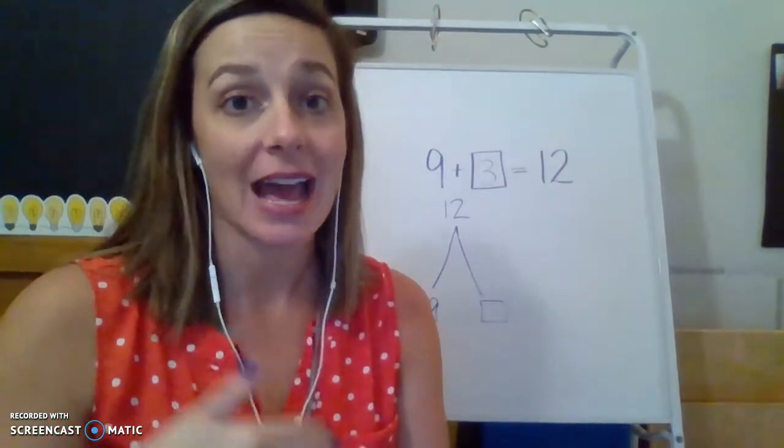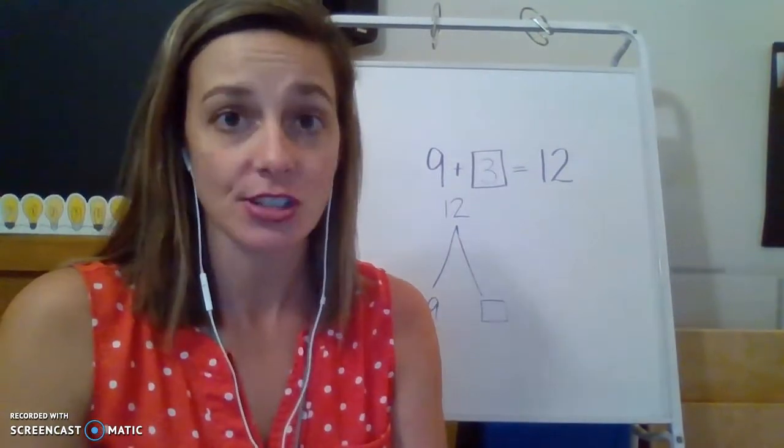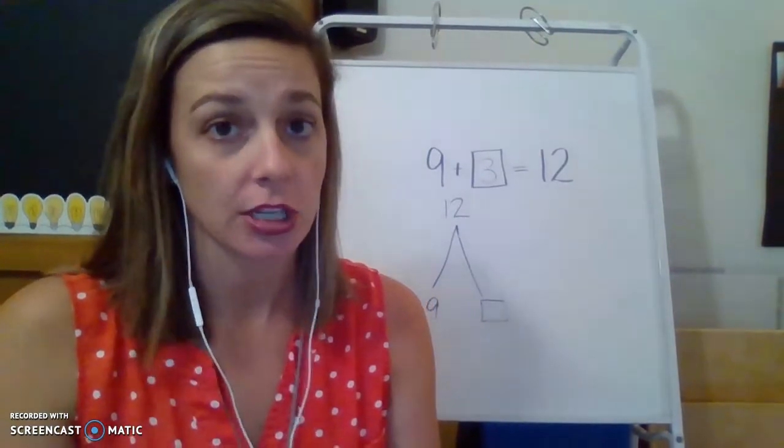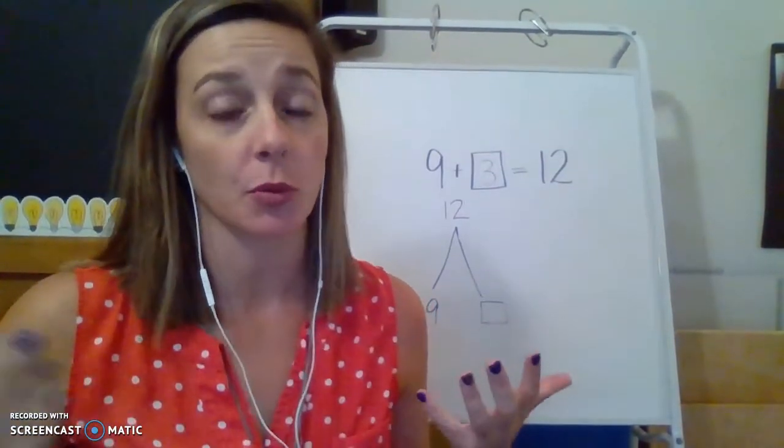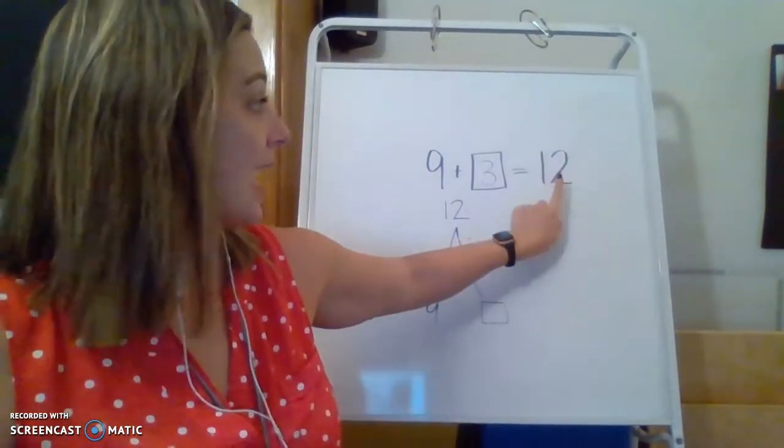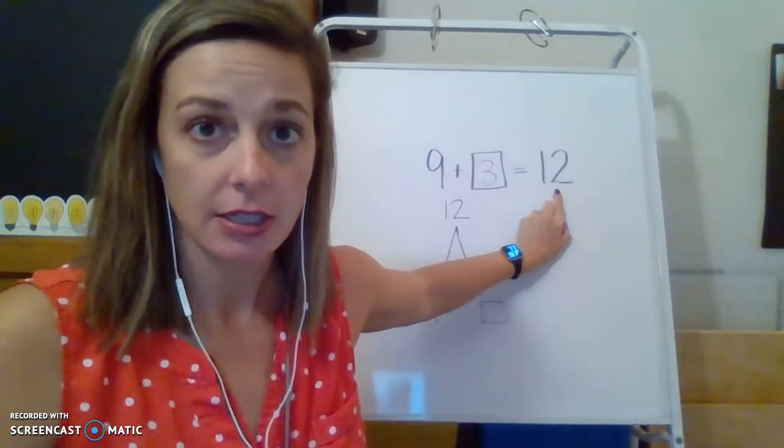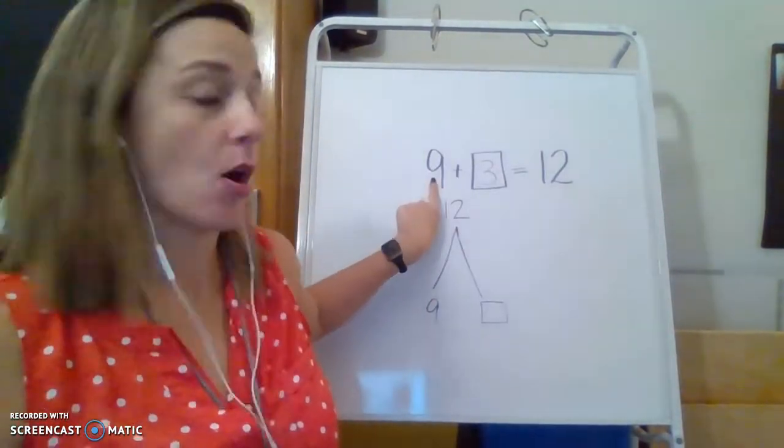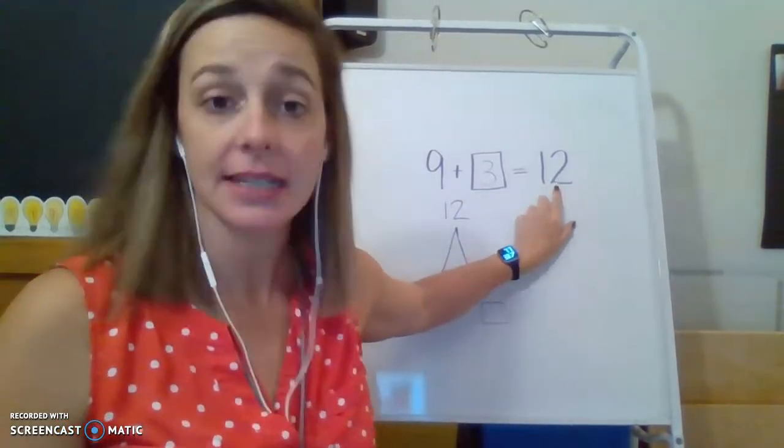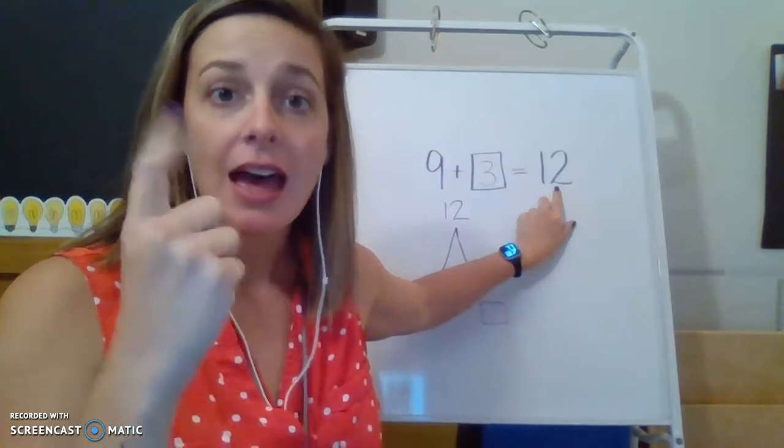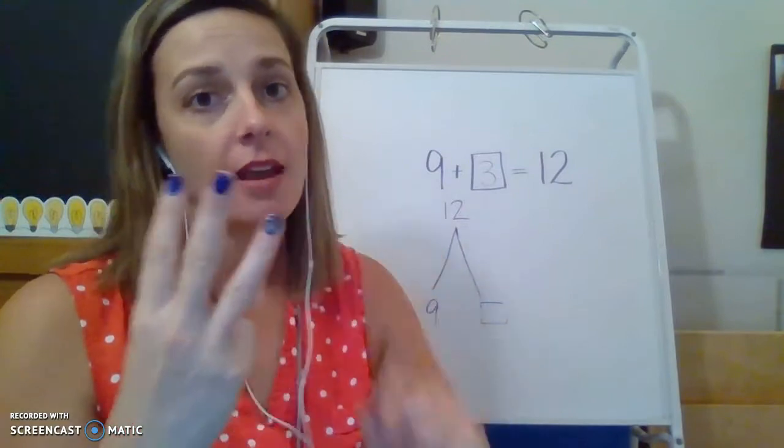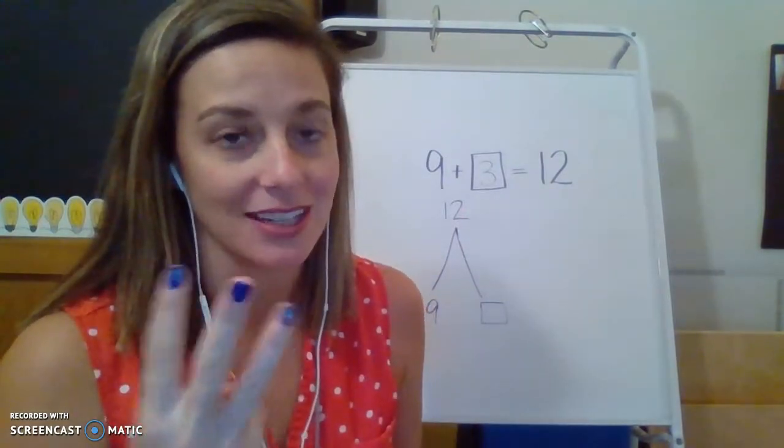Now, that's called counting on. I can also count back. Counting back can be a little bit trickier, especially if we're not comfortable with counting backwards. But when I count back, I can start at the bigger number and count down until I get to the smaller number, just like this. Let's grab the big number this time. 12, 11, 10, 9. Oh, guess what? I still got the same answer. It's still three.